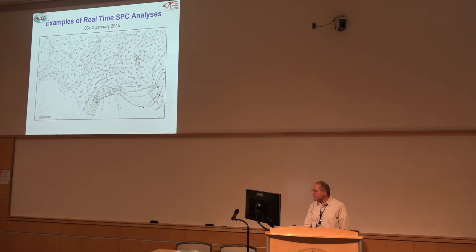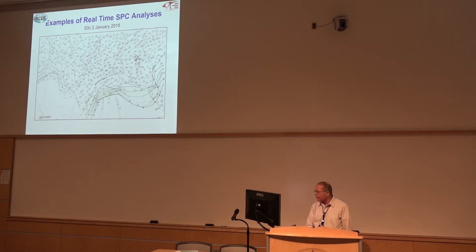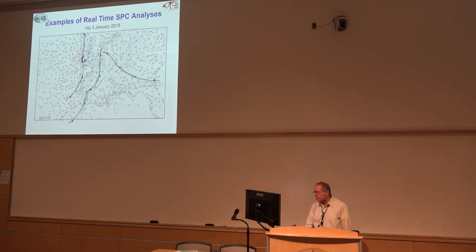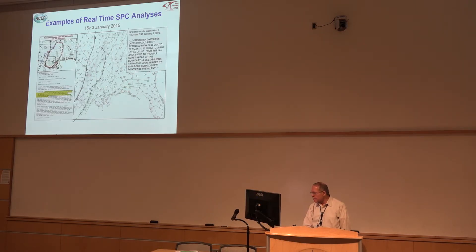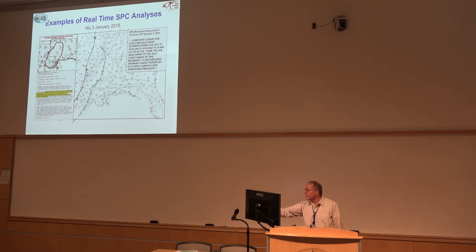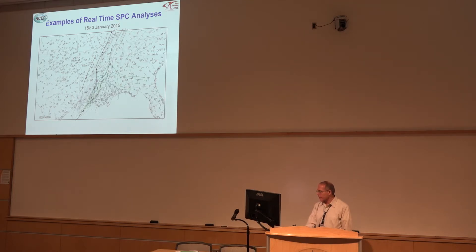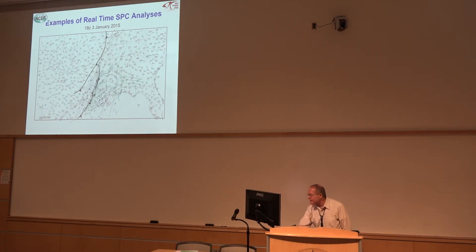Here's another case, January 2nd of 2015. The primary better air mass was down in the Gulf of Mexico and the low was in the Gulf, but as the day went on to 14Z, moisture increased inland. We have pressure falls and pressure rises with this system. We issued mesoscale discussions talking about the analysis — a composite convective outflow cold front from the Jackson area southwestward — with a destabilizing air mass coming in. Pressure falls developed in southern Mississippi and northern Louisiana. This blue area immediately ahead of that boundary showed pressure falls kept increasing.